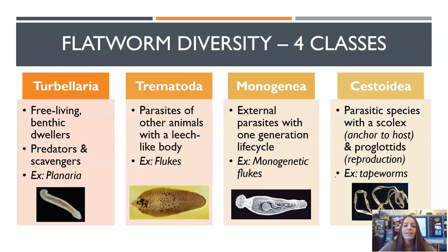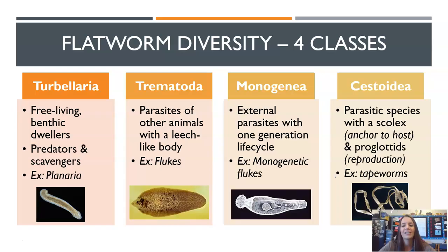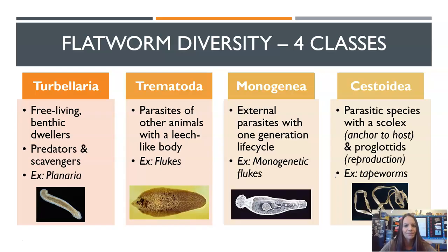Monogenea is another class called monogenea because they have a one-generation life cycle — mono meaning one — and they are external parasites. And then Cestoidea are tapeworms. These are parasitic species with a hooked mouth that anchors to the inside of your intestine or stomach, and their reproductive structures called proglottids are really efficient, producing lots and lots of eggs.